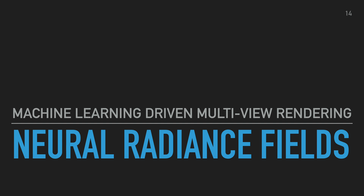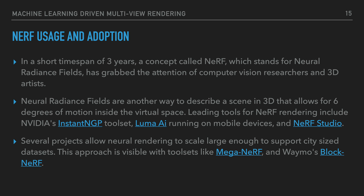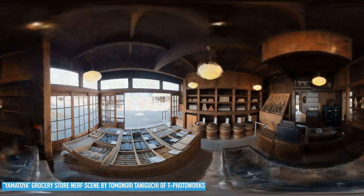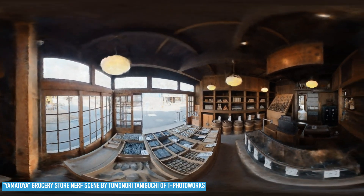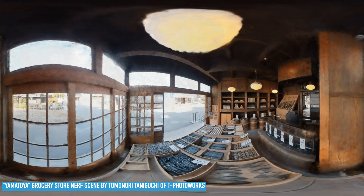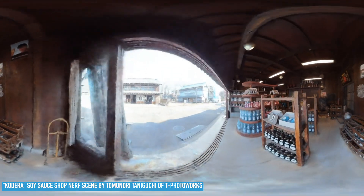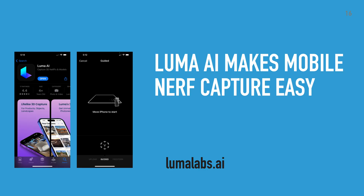Neural radiance fields: Machine learning driven multi-view rendering. In a short time span of three years, a concept called NeRF, which stands for neural radiance fields, has grabbed the attention of computer vision researchers and 3D artists. Neural radiance fields are another way to describe a scene in 3D that allows for six degrees of motion inside the virtual space. Leading tools for NeRF rendering include NVIDIA's Instant NGP toolset, Luma AI running on mobile devices, and NeRF Studio. If you want to get started with NeRF concepts, Luma AI makes mobile NeRF capture easy.